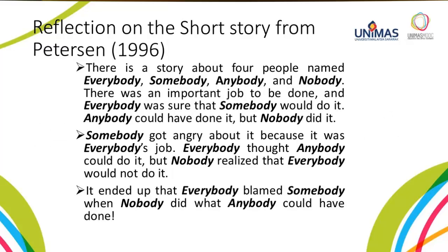There is a story about four people named Everybody, Somebody, Anybody, and Nobody. There was an important job to be done and everybody was sure that somebody would do it. Anybody could have done it but nobody did it. Somebody got angry about it because it was everybody's job. Everybody thought anybody could do it, but nobody realised that everybody would not do it. It ended up that everybody blamed somebody when nobody did what anybody could have done. From this reflection on the short story from Peterston 1996, make a short video of maximum three minutes on your own experience of a blaming game in completing a task.